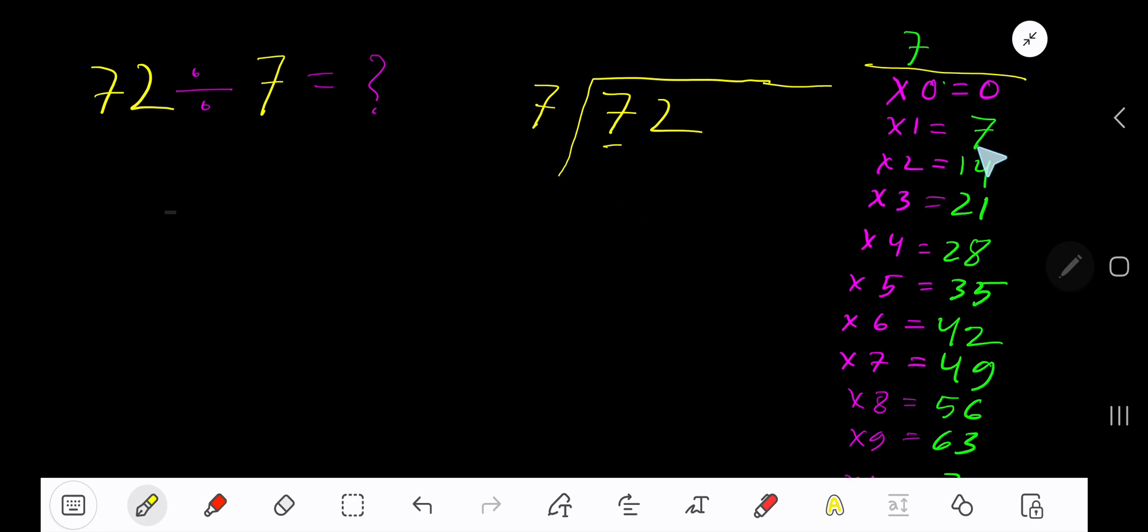7 goes into 7 how many times? 1 time. 1 times 7 is 7. Subtract to get 0. Bring down the next digit, 2.